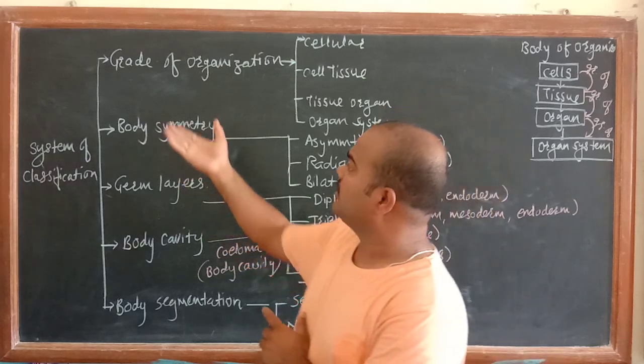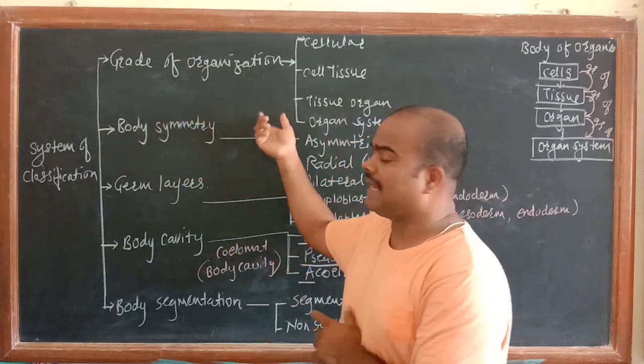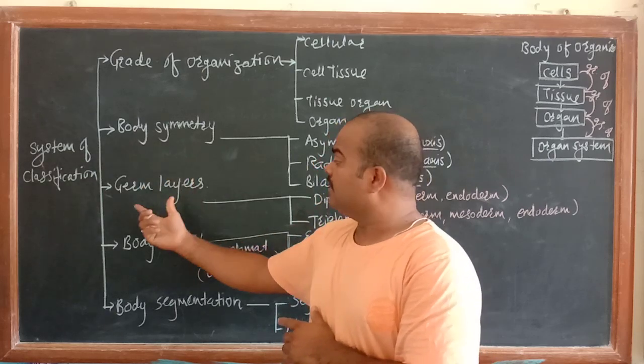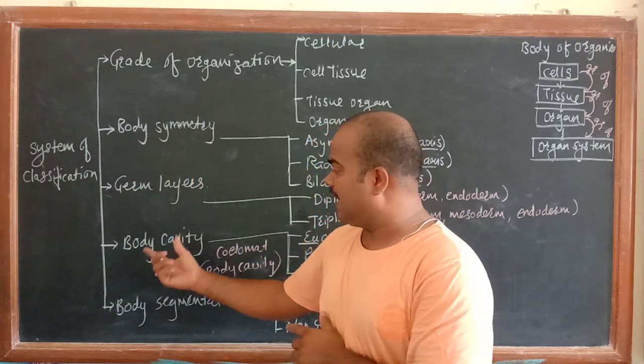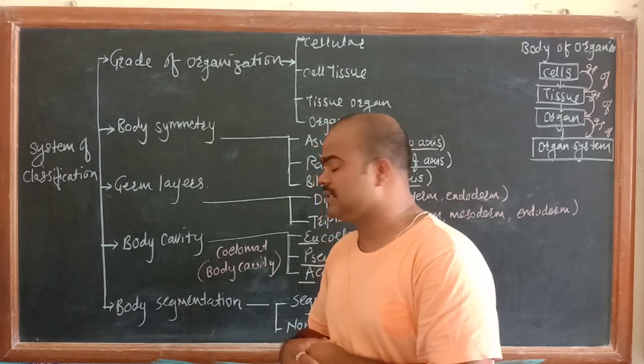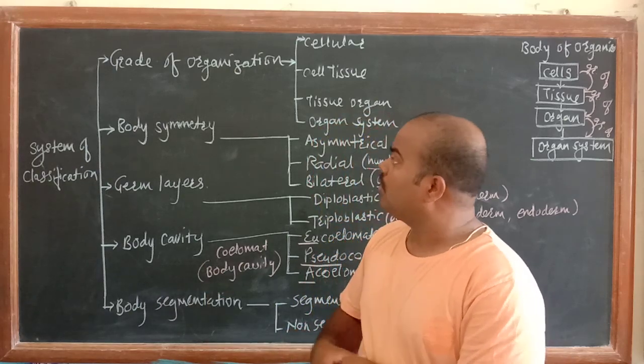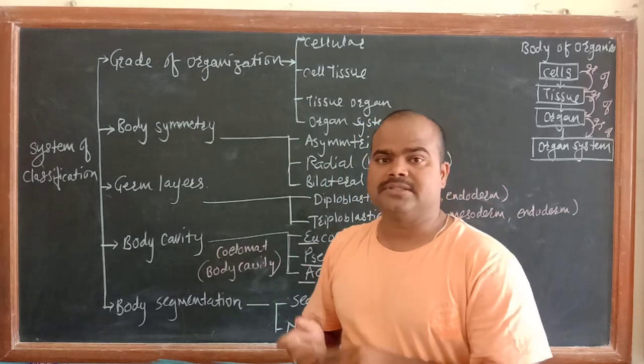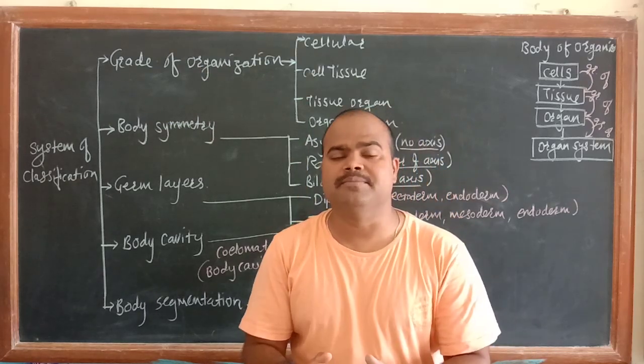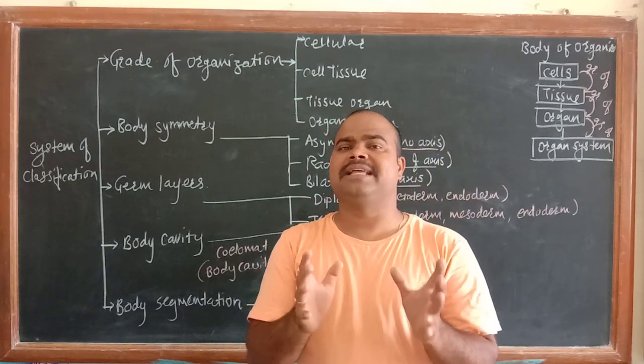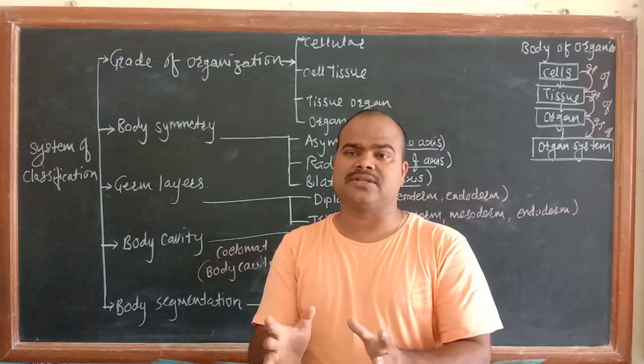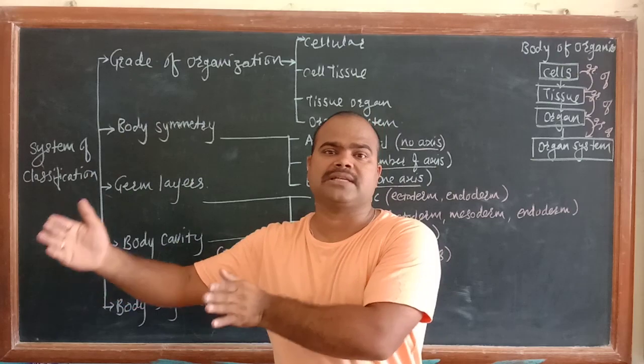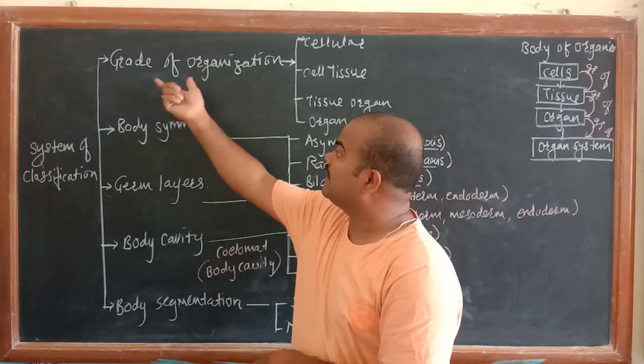These criteria are: grade of organization, body symmetry, germ layers and body cavity, and body segmentation. What does grade of organization mean? In any organism, the organism is graded on the basis of their cells, number of cells, and their functions.